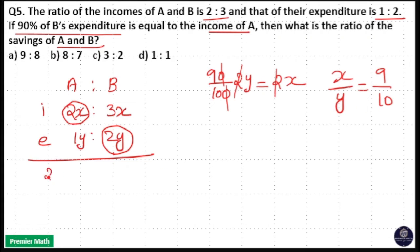Savings will be income minus expenditure, equal to 2x minus 1y is to 3x minus 2y. That is 2 into 9 equals 18, 1y equals 10, to 3 into 9 equals 27 minus 2 into 10 equals 20. So your savings will be 8:7.